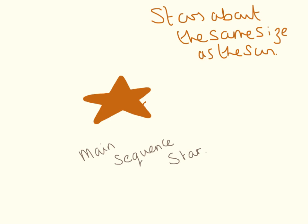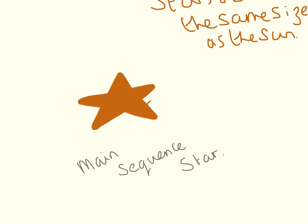Stars that are about the same size as the sun, once they've come to the end of their main sequence — once they've used up all of the lighter elements, once all the hydrogen and helium has undergone fusion — this sort of star will become a bit bigger. It will expand, but it won't expand as much as to a red supergiant. It will just become a red giant.